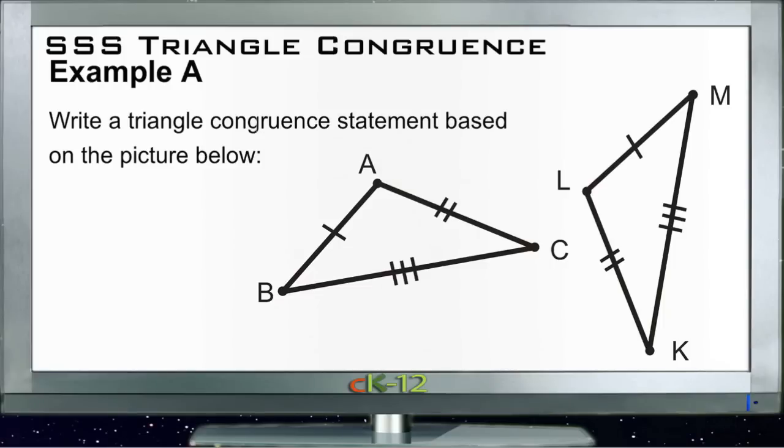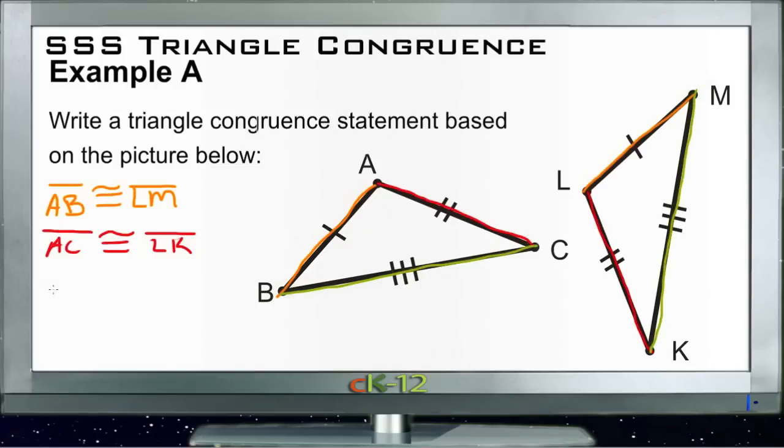Side AB is congruent with side LM, so we can say AB ≅ LM. The picture also tells us that AC is congruent with LK, so AC ≅ LK. And finally, BC is congruent with MK, so BC ≅ MK.